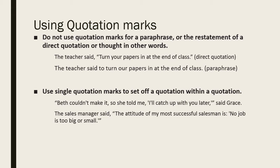We generally do not use quotation marks for a paraphrase or a restatement of a direct quotation. For example: The teacher said, 'Turn your papers in at the end of the class' — that is a direct quotation and takes quotation marks. But if the same thing is said as a paraphrase — 'The teacher said to turn our papers in at the end of class' — it becomes indirect speech, and we do not use quotation marks. Quotation marks are only used to indicate direct speech.